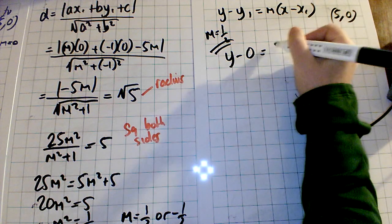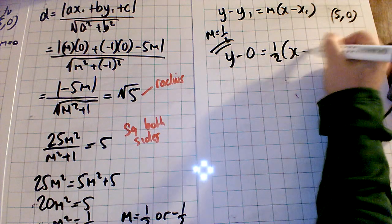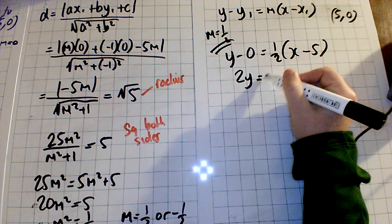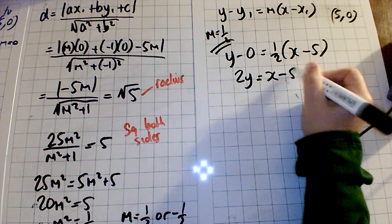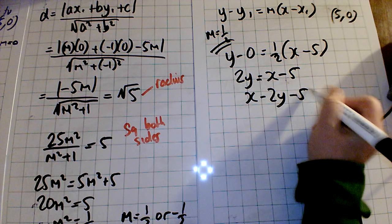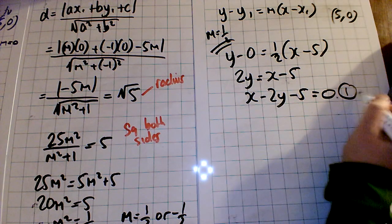So y minus 0 equals a half times x minus 5. We multiply the two up here. It becomes 2y equals 1 times x is x, 1 times minus 5, minus 5. And we'll bring everything to one side. x minus 2y minus 5 equals 0. That's one equation.